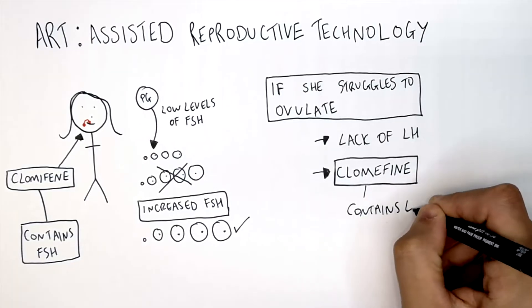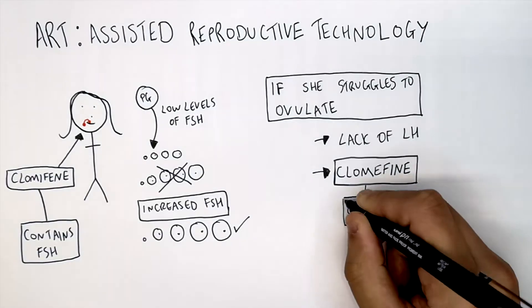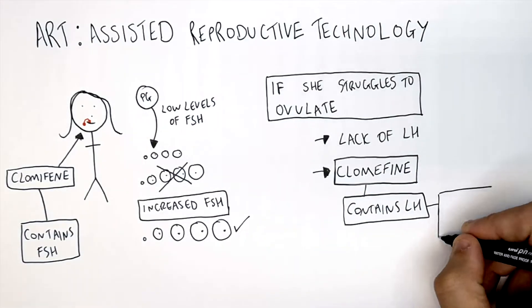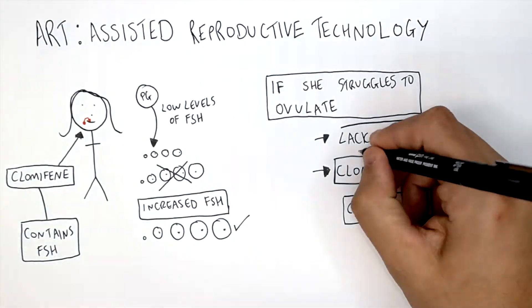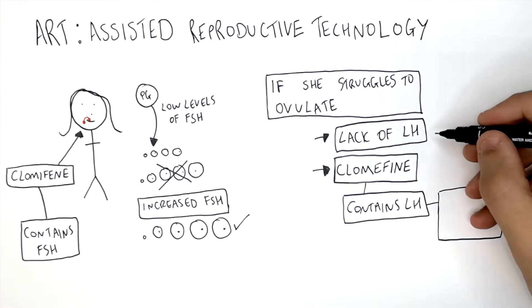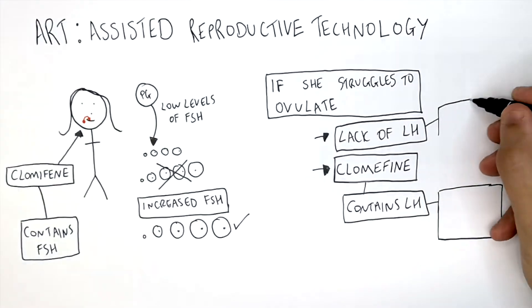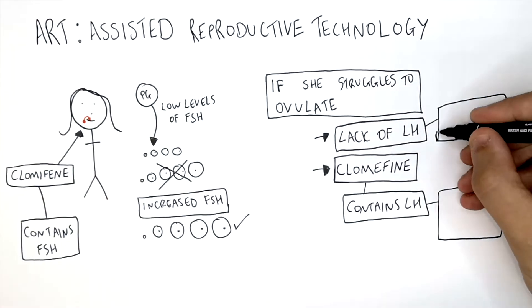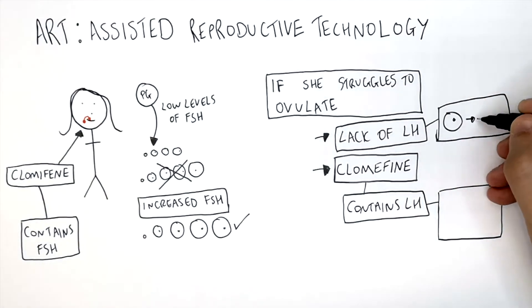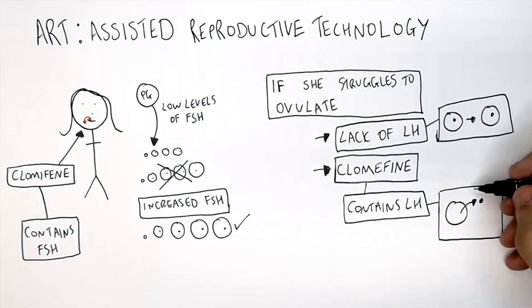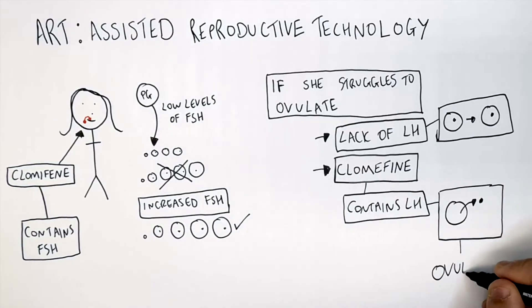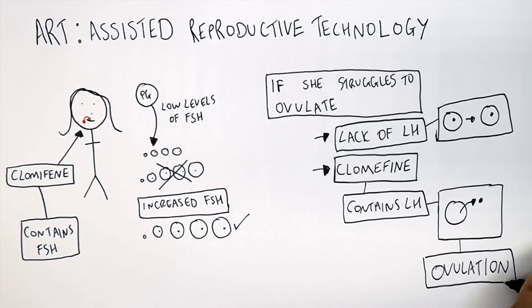Where there is a lack of LH, the female will not ovulate. When she is given LH via the clomiphene, the egg follicle will ovulate and release an egg.